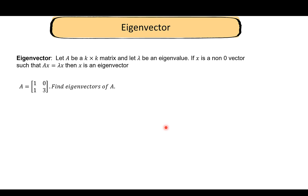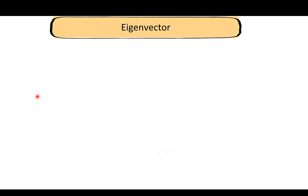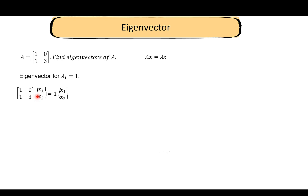For a k by k matrix A with eigenvalue λ, a non-zero vector x is an eigenvector of A if it satisfies A·x = λ·x. To find the eigenvectors, we solve this equation for each eigenvalue. Starting with λ_1 = 1, we substitute into A·x = x and work through the resulting system of equations.